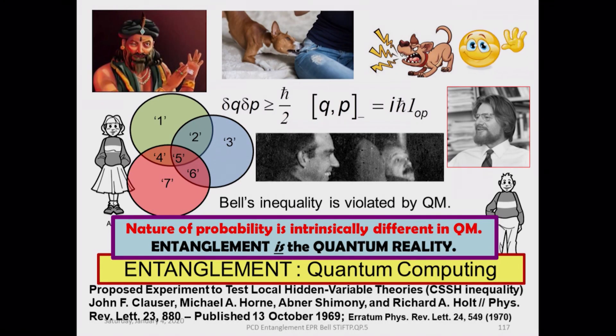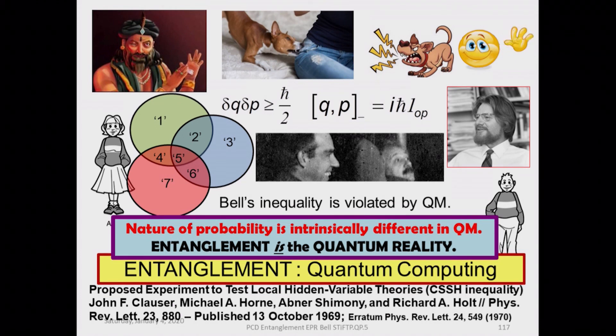I should mention this reference: a very nice paper, 'The experiment to test local hidden variable theories.' Another experiment was proposed by Clauser, Horne, Shimony, and Richard Holt, and this leads to a reformulation of Bell's inequalities called the CHSH inequality — a new avatar of Bell's inequality — giving another way of testing local hidden variables as opposed to intrinsic quantum entanglement. The inequalities are somewhat different in their final form.